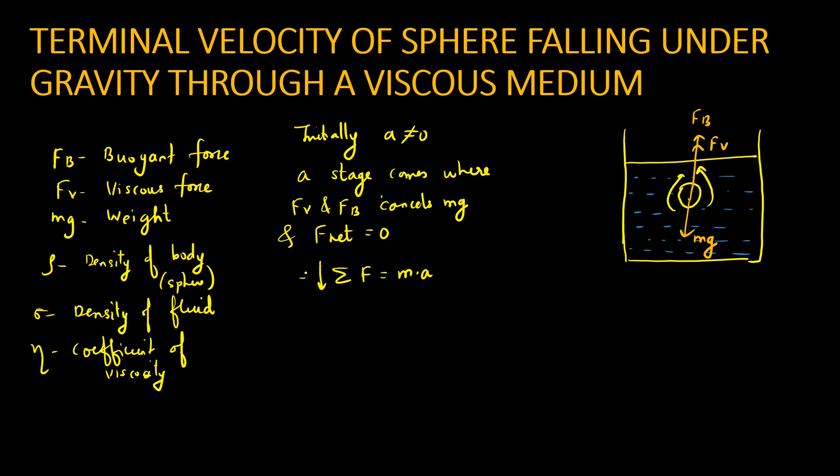So mg minus FB plus FV should be equal to m into a. Starting equation is valid. Later, acceleration becomes zero. Can I say sphere moves very uniformly? So mg should be equal to FB plus FV. For viscous force, we will use Stokes law.